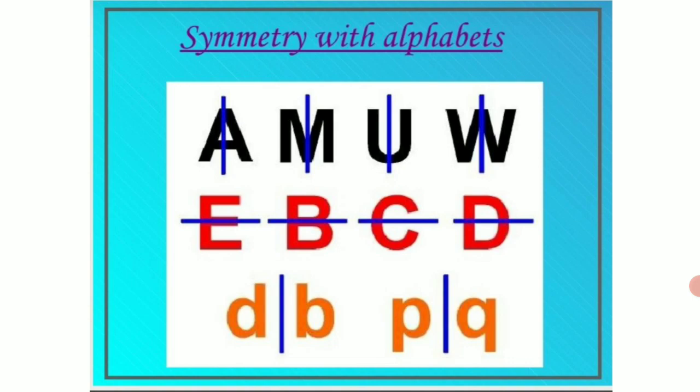Now children some objects are there which have either the vertical symmetry or the horizontal symmetry. And alphabets, here some alphabets are shown in the slide. Some are having the vertical symmetry like the alphabet A, M, U and W. Whereas the alphabets E, B, C and D are having horizontal symmetry. And the alphabet D and B is showing its mirror image or it is laterally inverted.